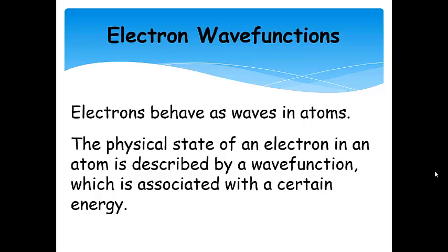In short, this is just a term for what we call an orbital. We call them electron wave functions because electrons behave as waves in atoms. The physical state of an electron in an atom is described by a wave function, which is associated with a certain energy.